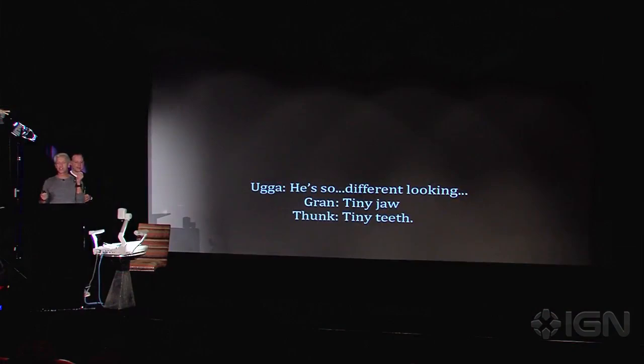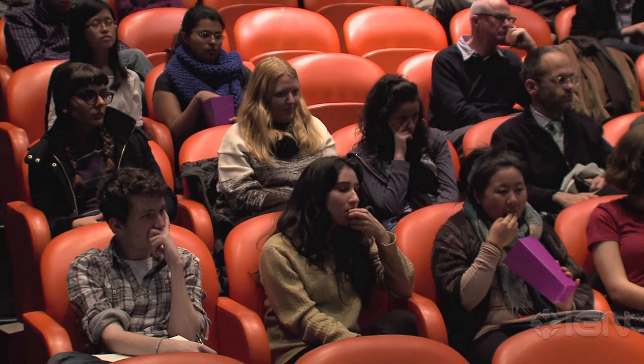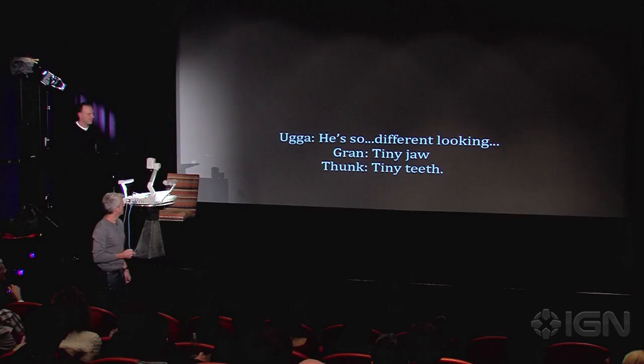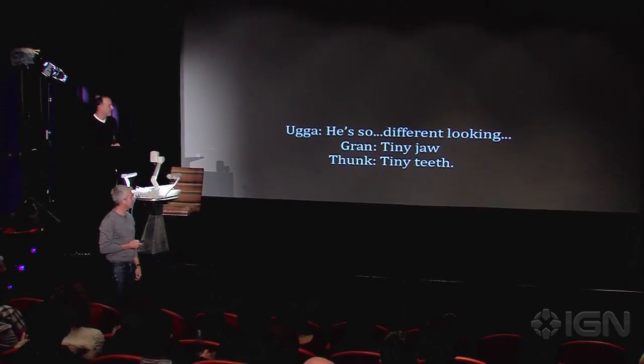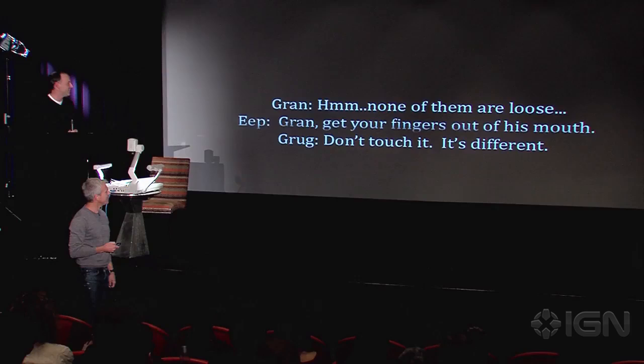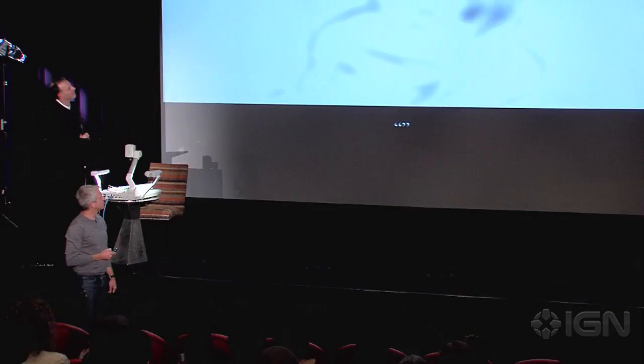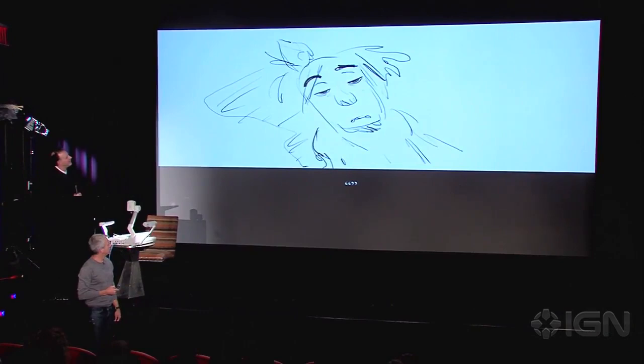This is a sequence that was written and handed off to the story artists. It's the first time the entire family meets Guy — he got knocked out. So we're going to open from Guy's point of view. He's so different looking — tiny jaw, tiny teeth, and none of them are loose. 'Cran, get your fingers out of his mouth.' 'Don't touch it, it's different.' 'It's a boy.' 'A boy what?' Then from Guy's point of view — he's waking up. 'Everybody, pretend you don't know me.'